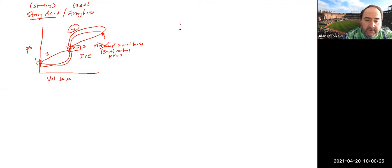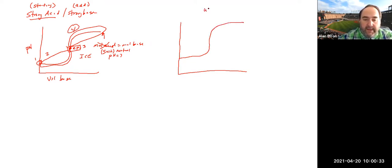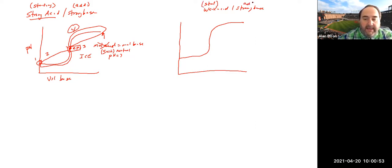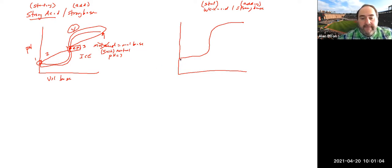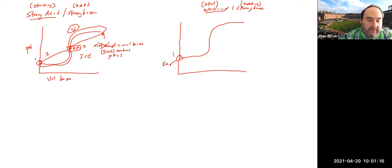We also saw a weak acid and strong base titration curve, which looks very similar. Here we're starting with the weak acid in the flask and adding strong base from the burette. This curve also has four parts. Before we start, we have only a weak acid, so this is a Ka-type problem — use molarity in the ICE table since we haven't added anything yet.